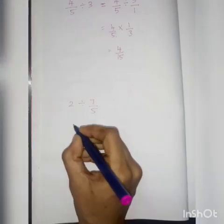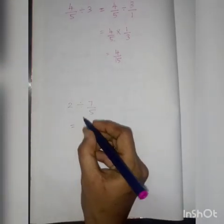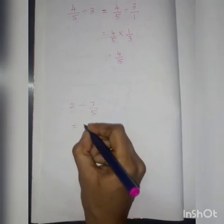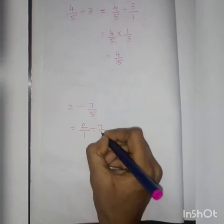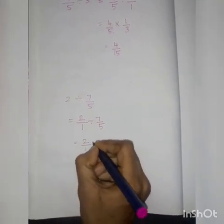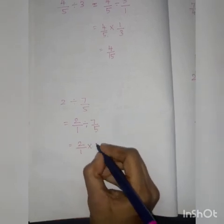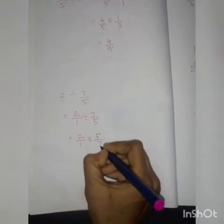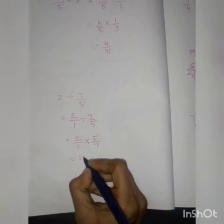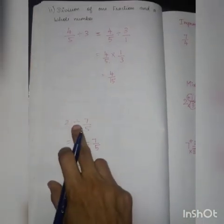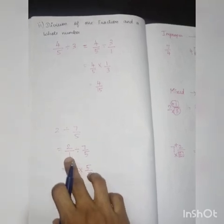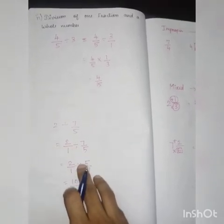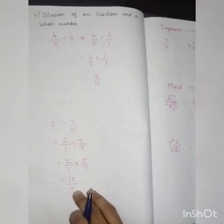Next question: a whole number divided by a fraction — 2 divided by 7 by 5. Write the whole number 2 as 2 by 1, then division by 7 by 5. Convert division to multiplication and take the reciprocal of the second fraction: 7 by 5 becomes 5 by 7. Multiply: 2 into 1 is 2 into 5, which is 10; 1 into 7 is 7. Answer is 10 by 7. You are just changing the whole number to a fraction, then the division symbol becomes multiplication, reciprocal, then multiply and write.